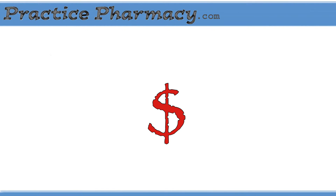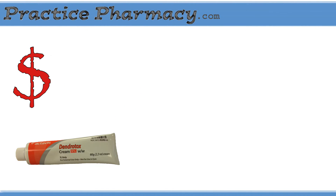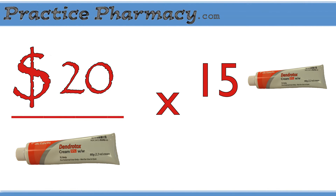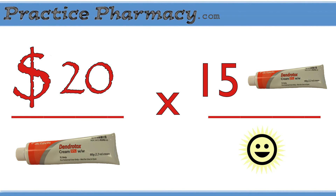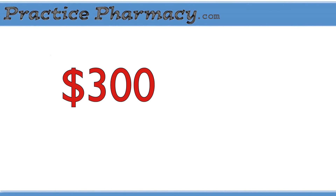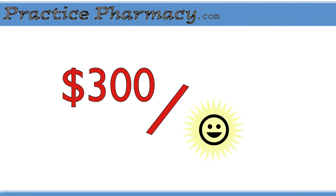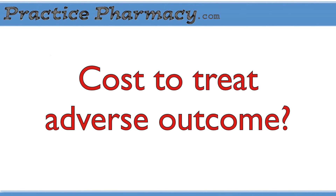The number needed to treat can be used to make formulary decisions. For instance, if Dendrotox costs $20 a tube, then the cost to prevent one case of allergic rash would be $20 per use times 15 people, which turns out to be $300 spent to prevent one case of allergic rash. So depending on how much it costs to treat an allergic rash, $300 per prophylaxis may or may not be a reasonable amount to spend.